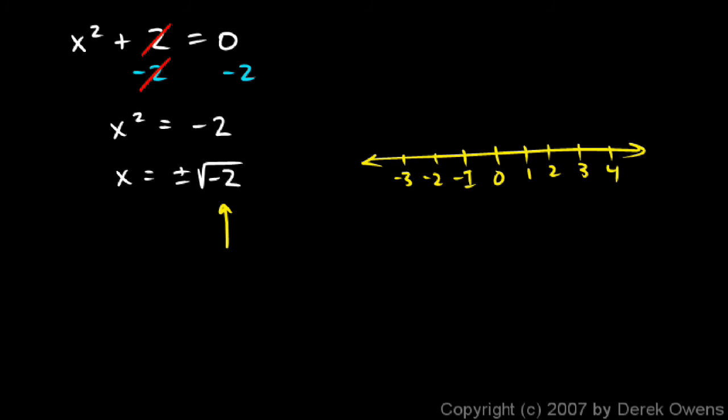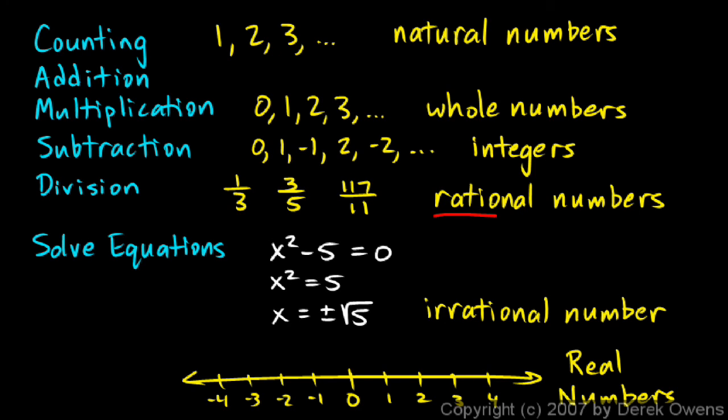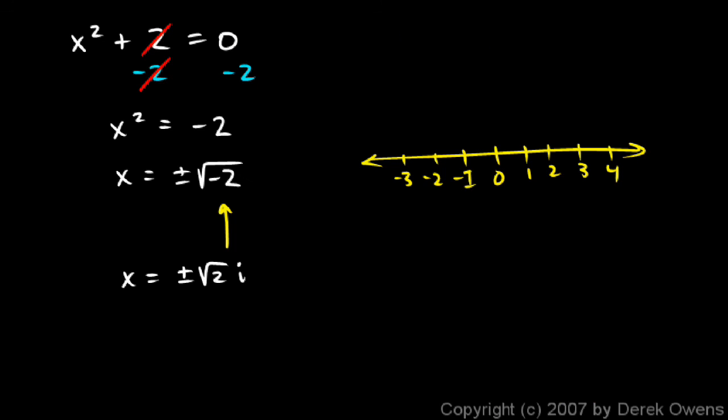To solve this, we need imaginary numbers or complex numbers. This could be written as x equals plus or minus the square root of 2 times i. And the i shows up. So we need that if we're going to solve certain types of equations. So we started with basic counting, and we got more and more complicated all the way down to solving equations.